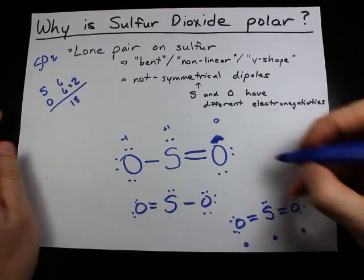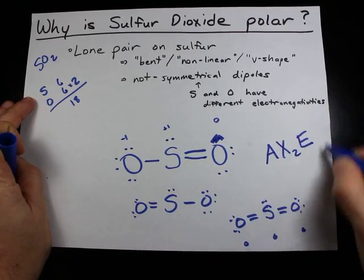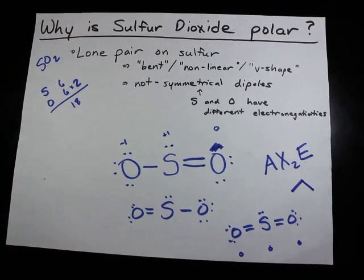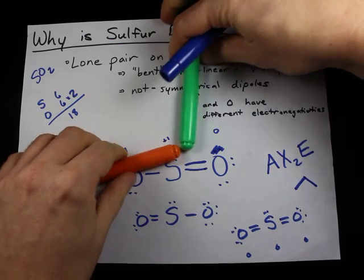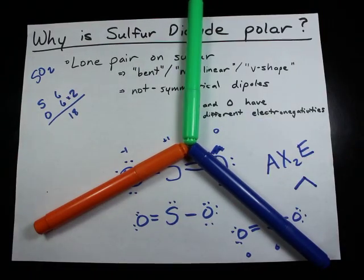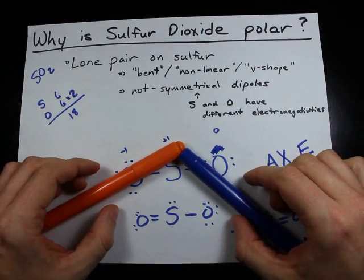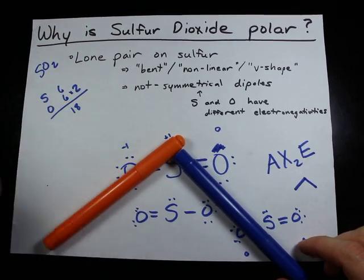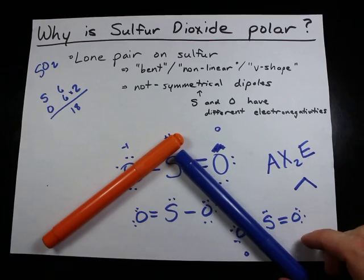This gives it an AX₂E VSEPR geometry, which is bent. It's like a trigonal planar molecule where all of the bond angles are 120 degrees, except one of the bonds is actually a lone pair. That causes the bond angle to compress down to approximately 118 degrees.